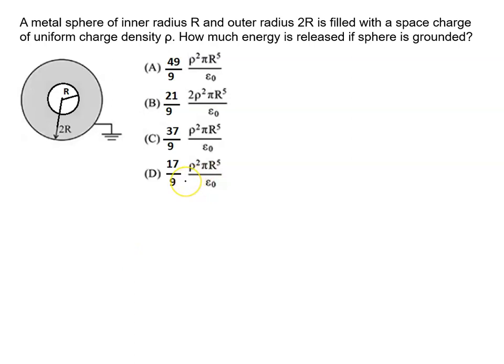A metal sphere of inner radius capital R and outer radius 2R is filled with a space charge of uniform charge density rho. How much energy is released if the sphere is grounded? If you have grounded, how much energy will you release?